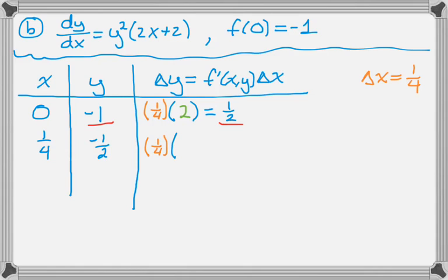And I substitute in. So I get the quantity (-1/2)², which I know is 1/4. And then times 2·(1/4), which is going to be 1/2, plus 2. So depending on how you want to write your answer, you could actually write that f(1/2) is approximately -1/2 plus this thing that I just wrote. And that would be fine because you don't have to simplify things.